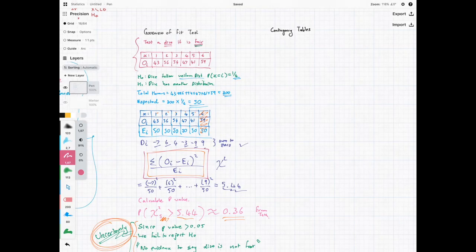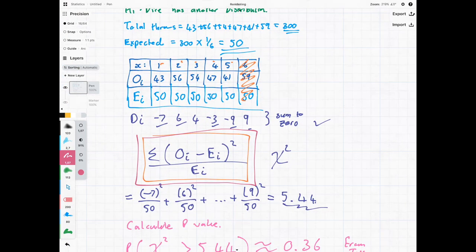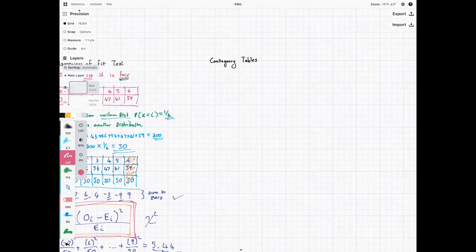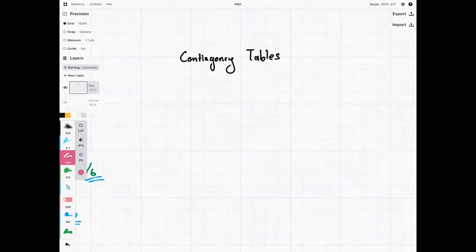Hi everyone, it's MJ. Welcome back to hypothesis testing. In the previous video we looked at the goodness of fit test and we used this test statistic which we are going to be using again for our contingency table example where we're testing whether two factors are independent.